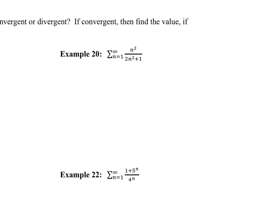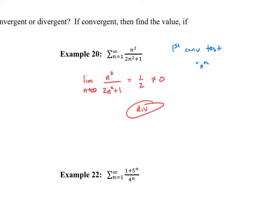Example 20: my first go-to is almost always to take the limit and see what happens. In this case I get one half, which is not equal to zero. By the first convergence test — sometimes called the nth term test — this is a divergent series because the limit is not equal to zero. That test, when it works, is so easy and fast.